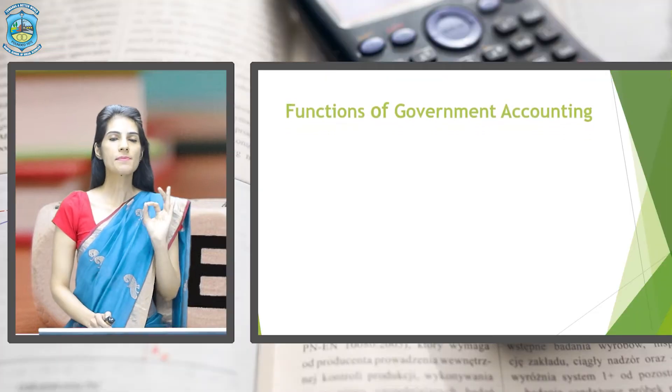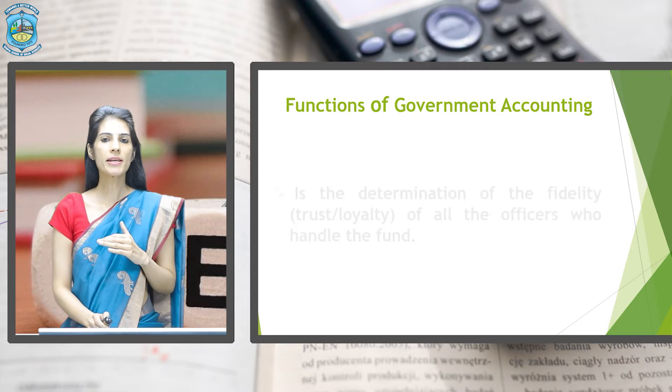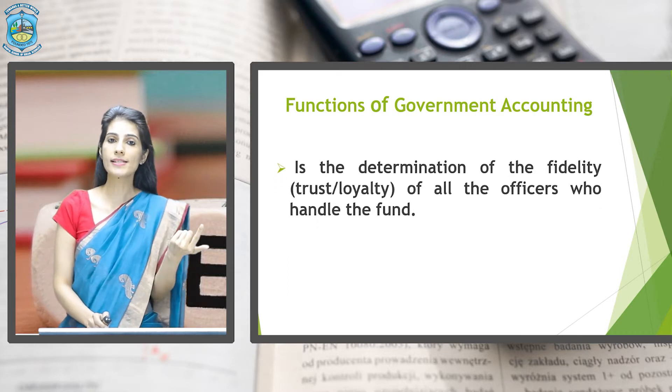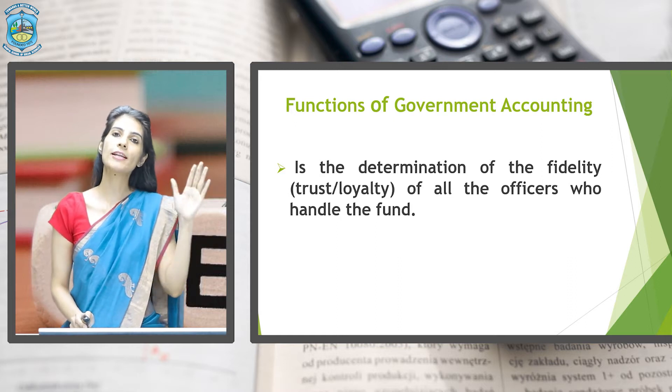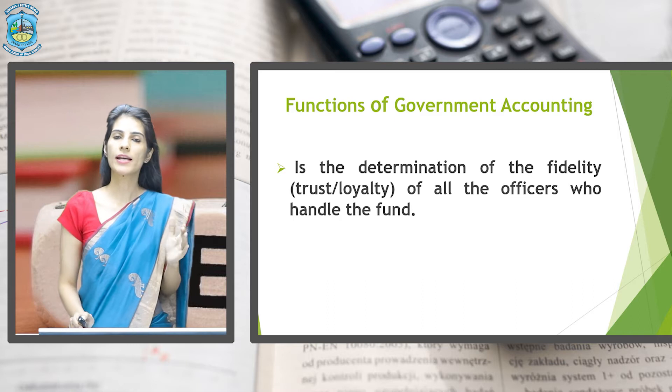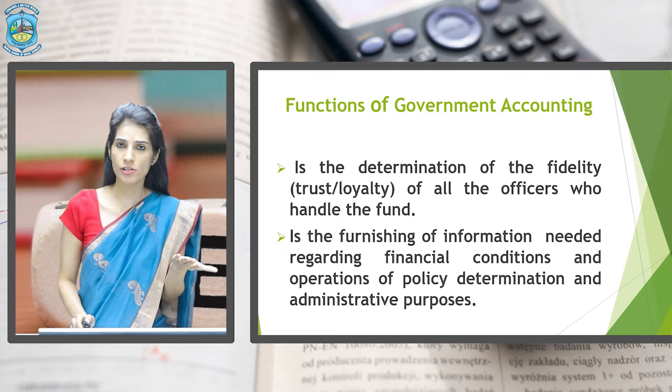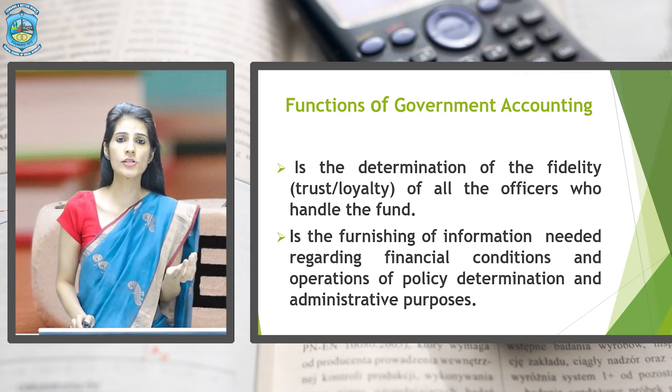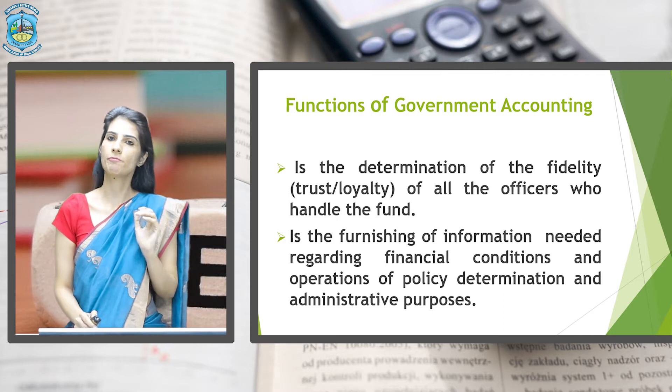Now what do you mean by Government Accounting? There are two words involved: Government as well as Accounting. Government Accounting refers to the process of recording and management of all the financial transactions that are incurred by the Government, including its incomes and expenditures. The first main function of Government Accounting is the determination of fidelity — fidelity means the trust and loyalty of the officers who are dealing with the funds of the Government. The second function is to see that whether the financial information being furnished is according to the policy determination and administrative purposes.